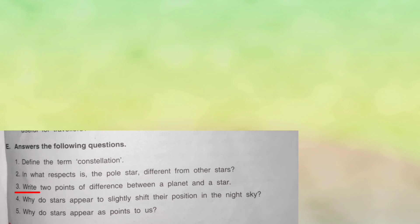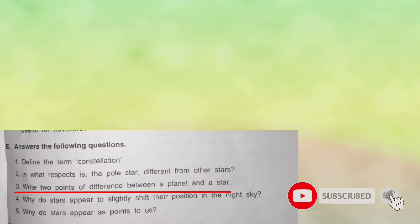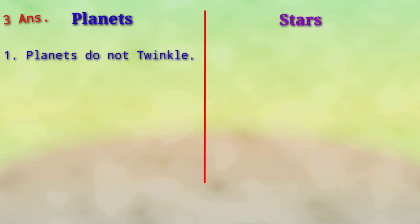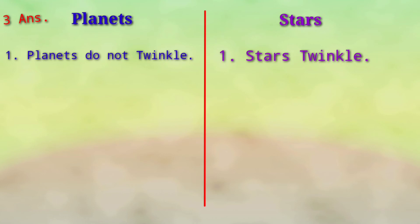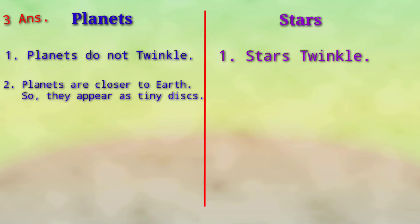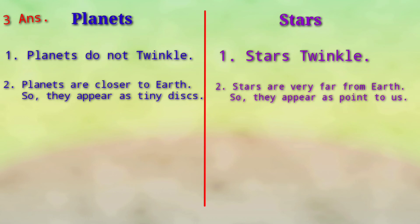Write two points of differences between a planet and a star. First: planets do not twinkle, whereas stars twinkle. Second: planets are closer to us and they appear as a small disk. Stars, on the other hand, are very far away from us, so they appear as tiny dots or points.